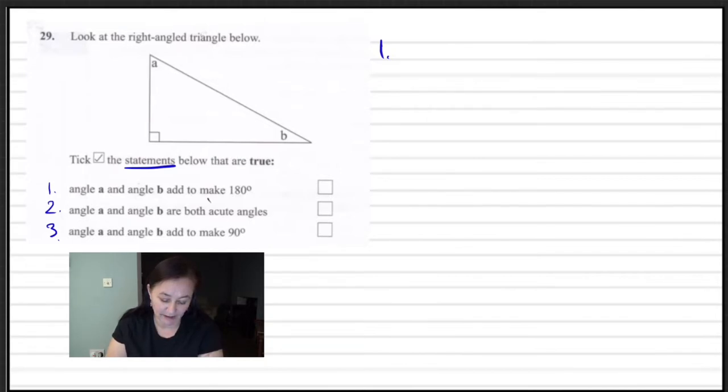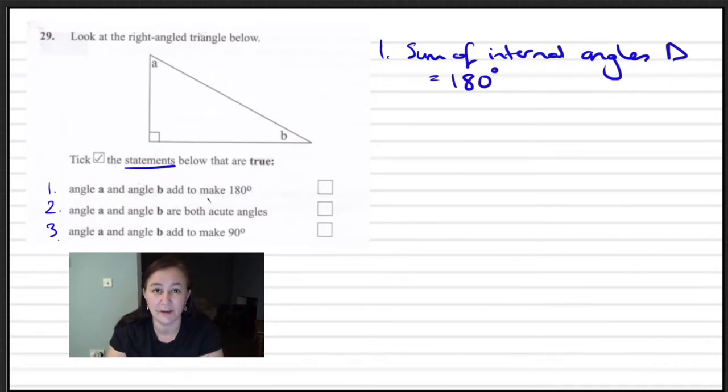So number one, angle A and angle B add up to be 180. We know that all internal angles of a triangle equal 180, so that is the sum of all of the internal angles including the third one as it is in this particular case. Because we have a 90 degree angle going on, we know that it's not possible for A and B to add up with the right angle triangle to be 180. So we can say that one can't be true.